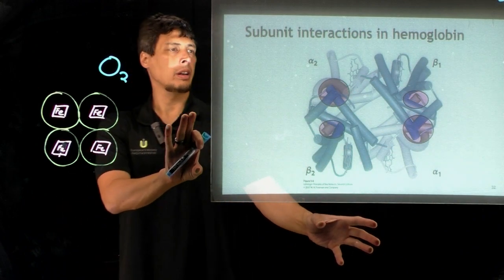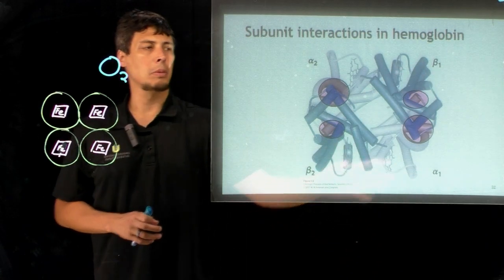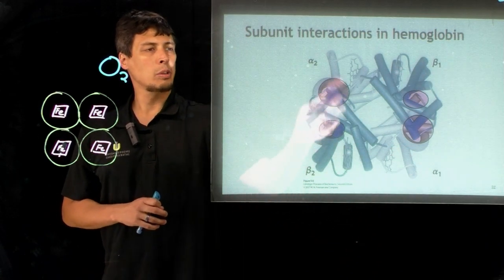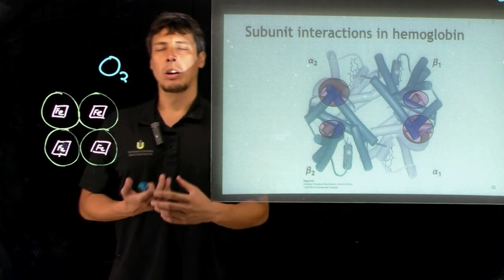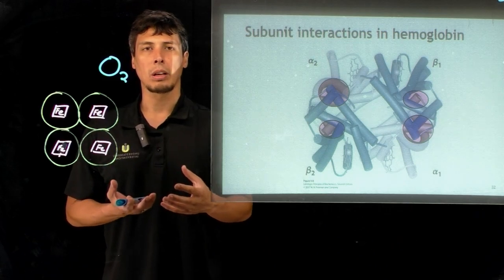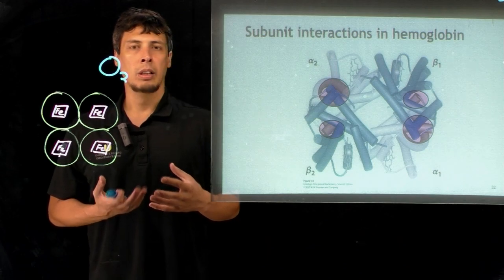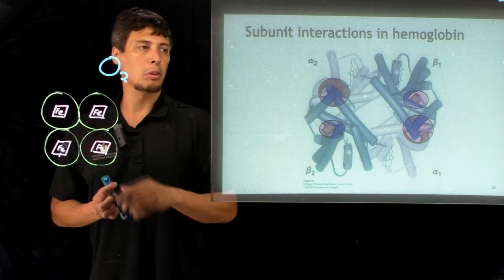In this figure on the right hand side, beta subunits are shown in blue while the alpha subunits are shown in gray. These regions that are circled and highlighted are regions where these two interact, where there are interactions between side groups and different functional groups of the amino acids that allow for this inter-subunit communication.